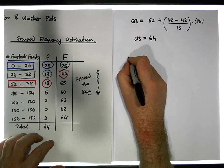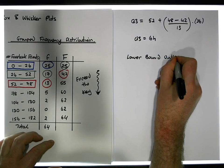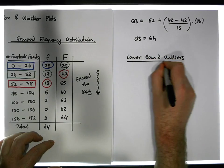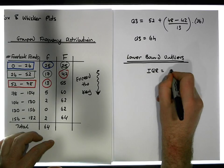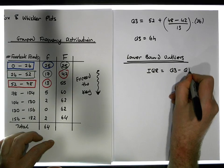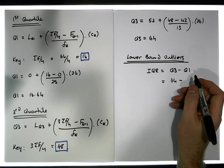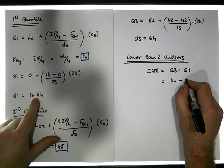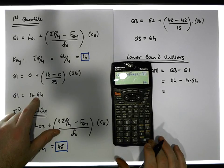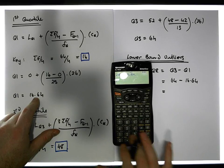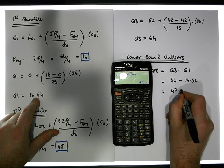For our lower bound outliers, we first need the interquartile range. The interquartile range is Q3 minus Q1, which is 64 minus 16.64, giving us a value of approximately 47.4.